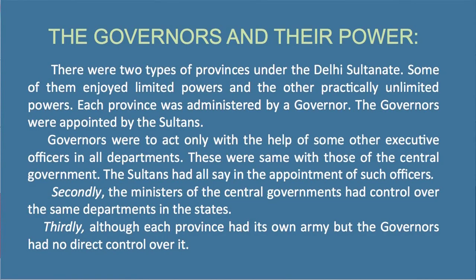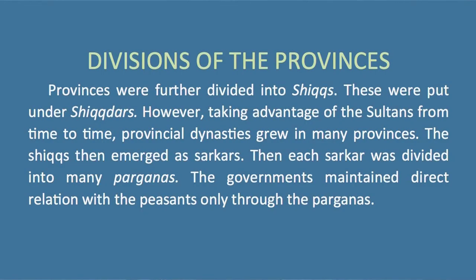Although each province had its own army, the governors had no direct control over it. The provinces were further divided into divisions called Siqas, put under Siqadars. These Siqas then emerged as Sarkars, and each Sarkar was divided into many Parganas. The governments maintained direct relations with the peasants only through the Parganas.